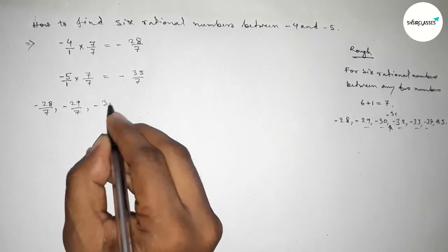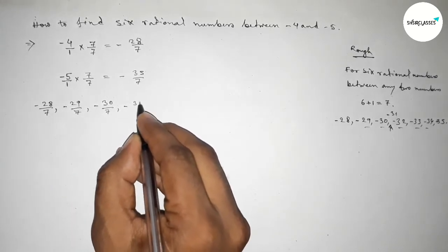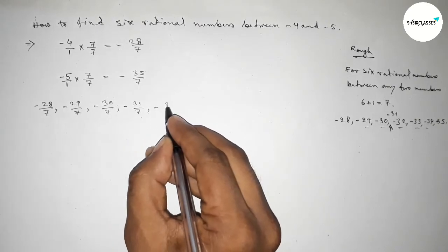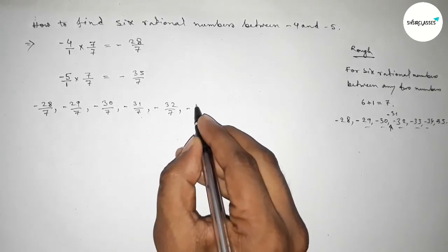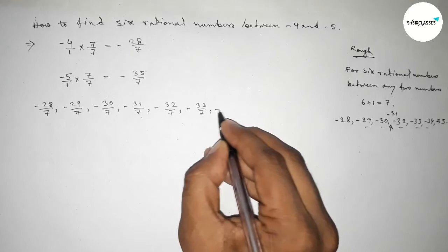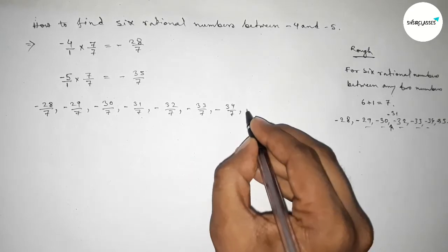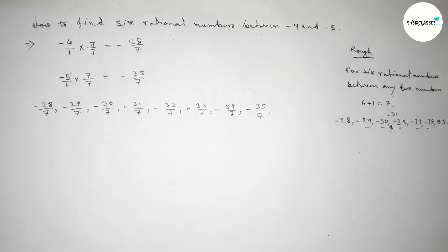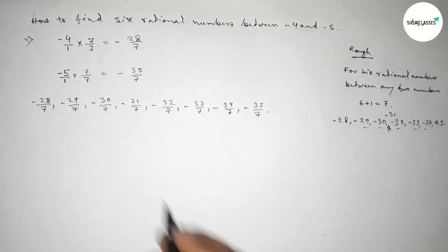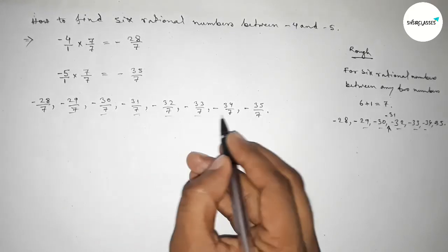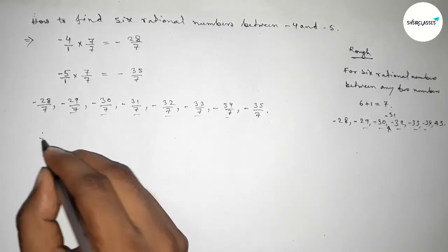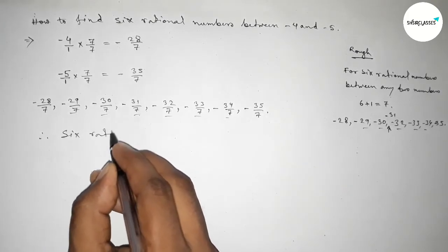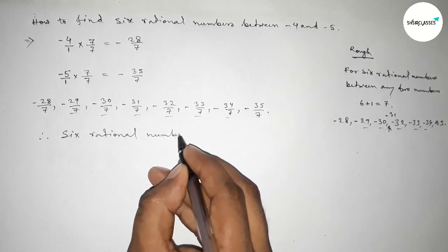Up to minus 35 over 7. And among these, these are the required six rational numbers between minus 4 and minus 5. So therefore, the six required rational numbers between minus 4 and minus 5 are: